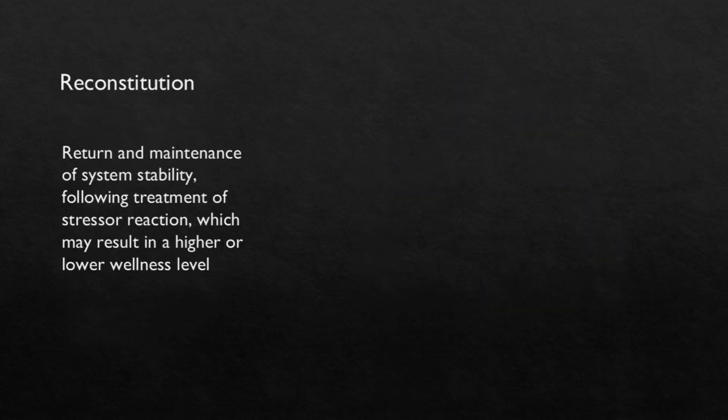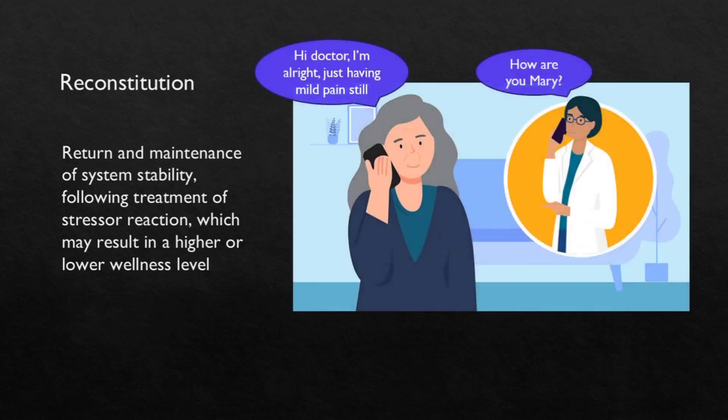Next is reconstitution. It is the return and maintenance of system stability following treatment of stressor reaction, which may result in a higher or lower wellness level. After getting treatment, my health is improved and I am slowly getting back to my previous stable structure. It can be a higher wellness level or a lower wellness level — my pain can be completely gone, or it may be present occasionally, but I am able to continue my daily work routine with medications. So I am regaining my stability — that is reconstitution.